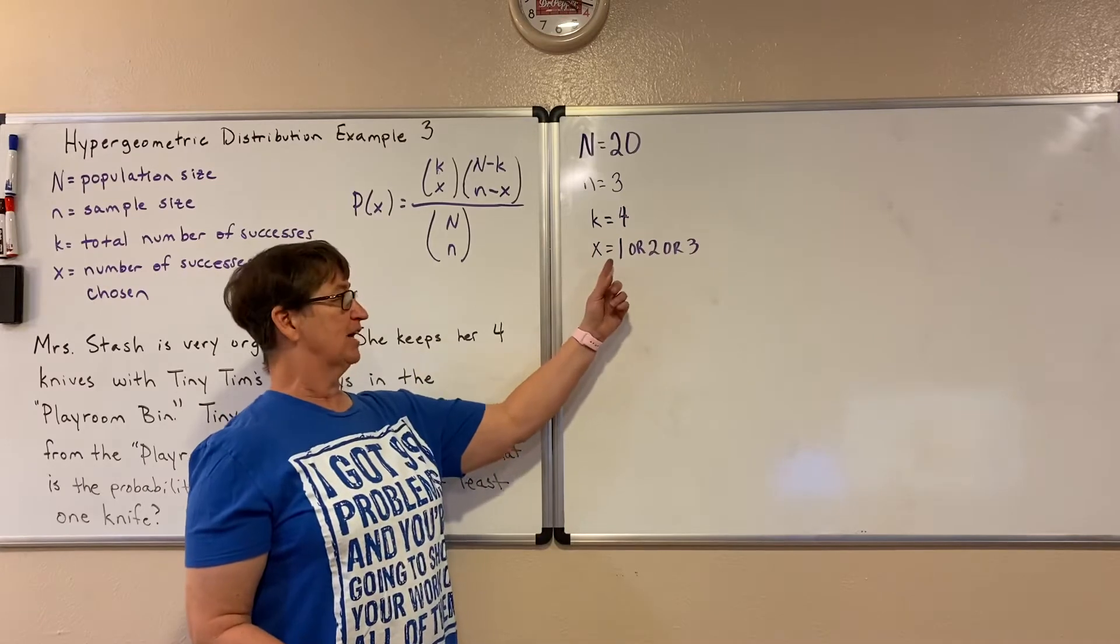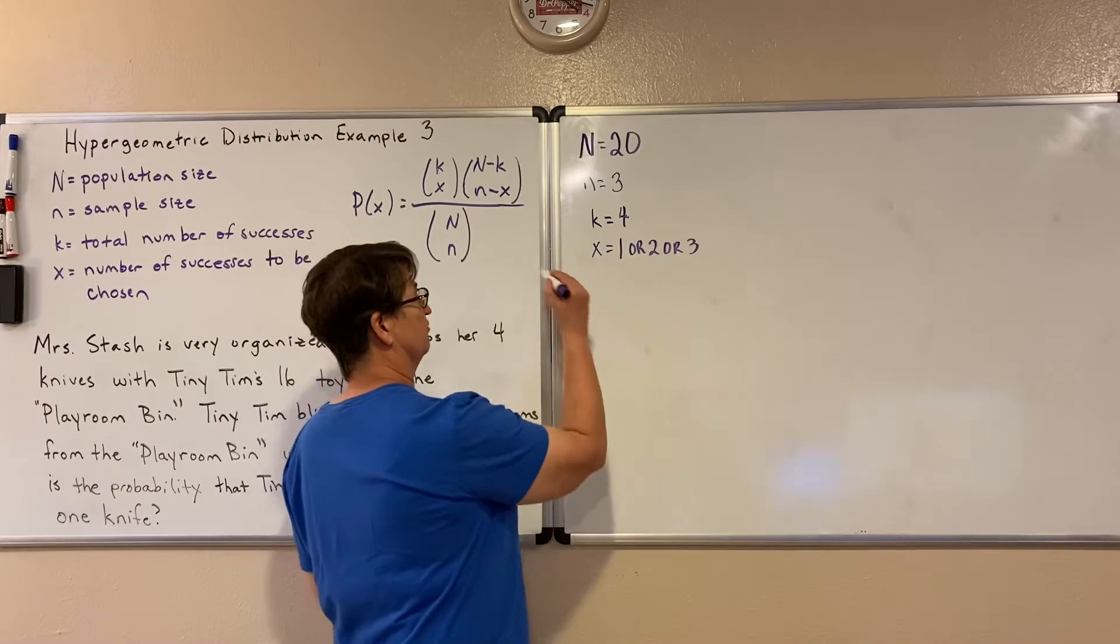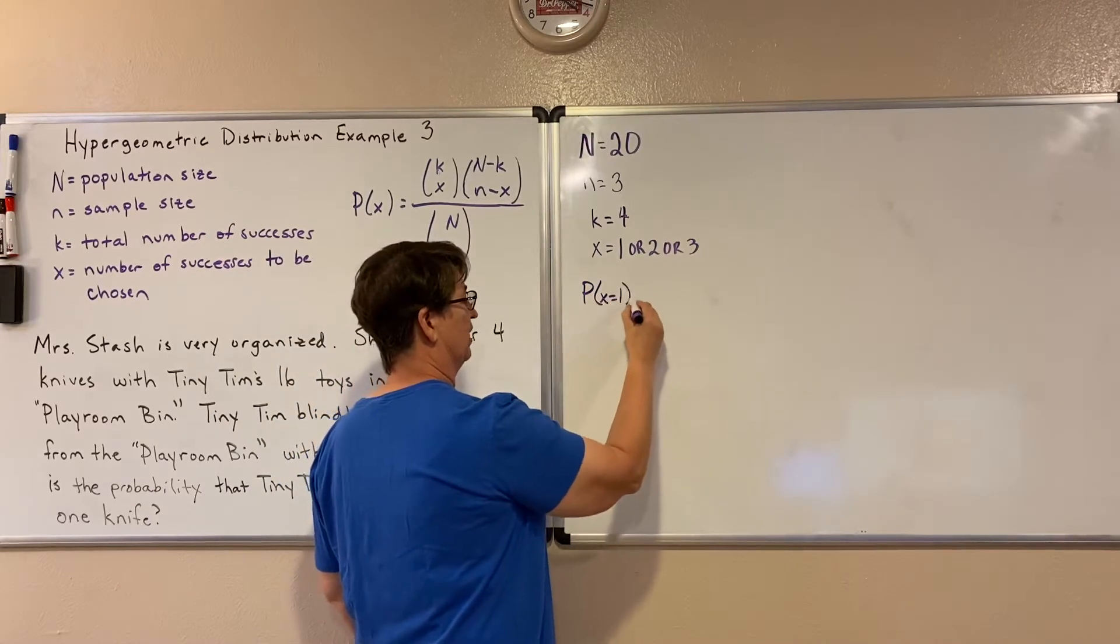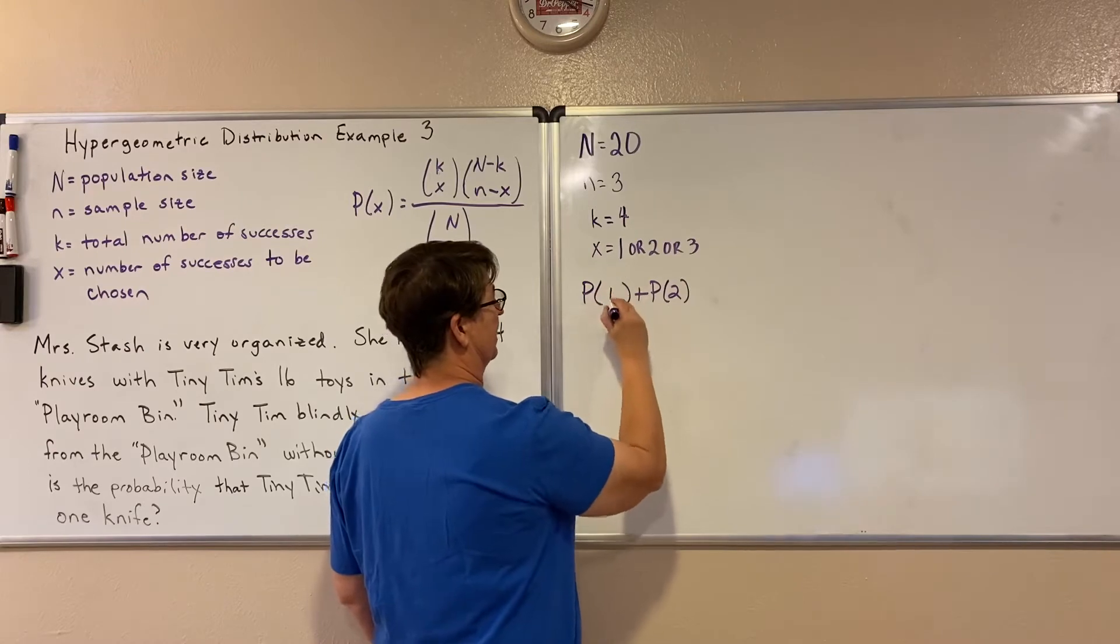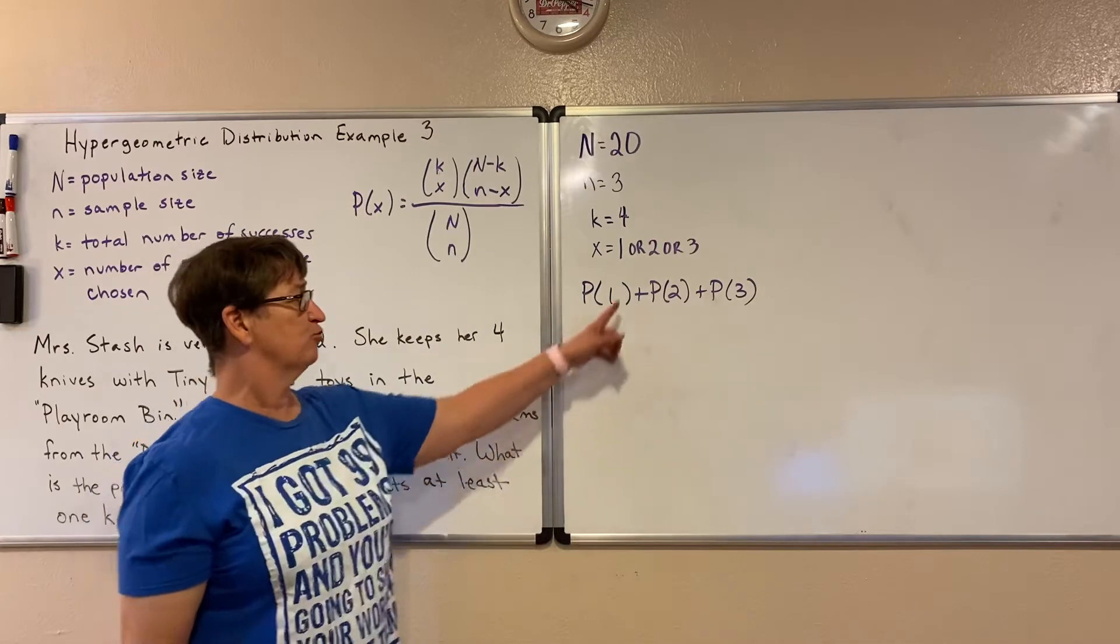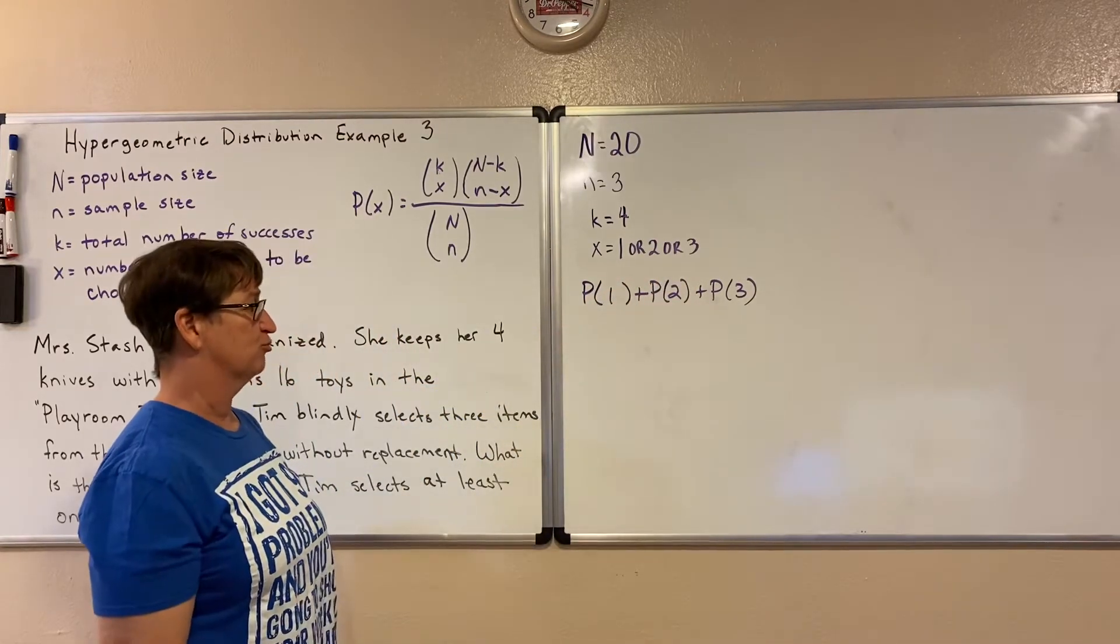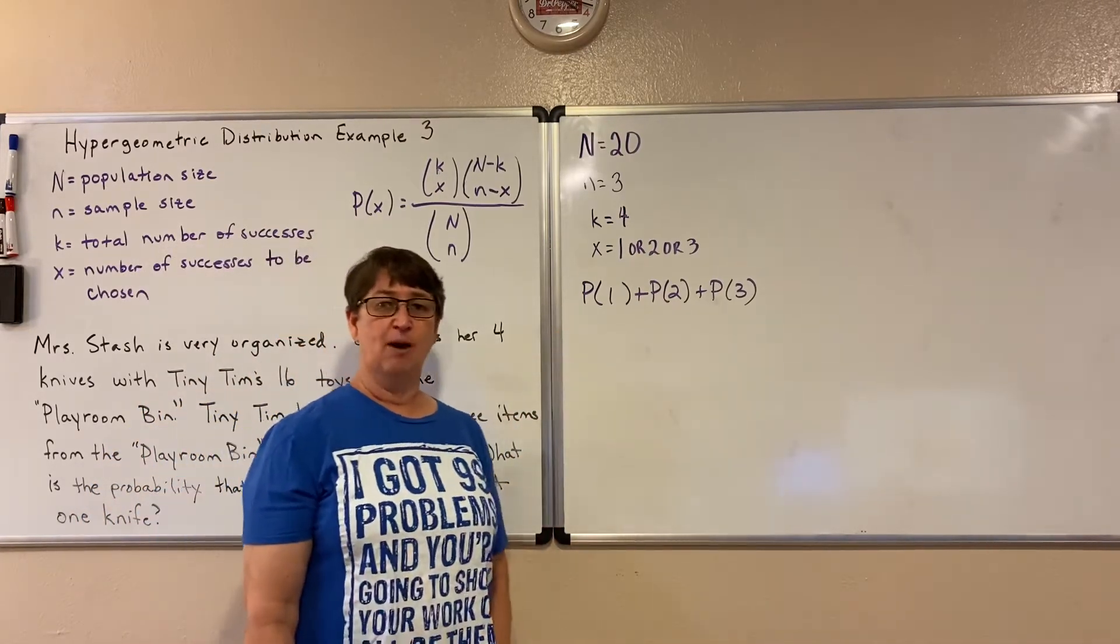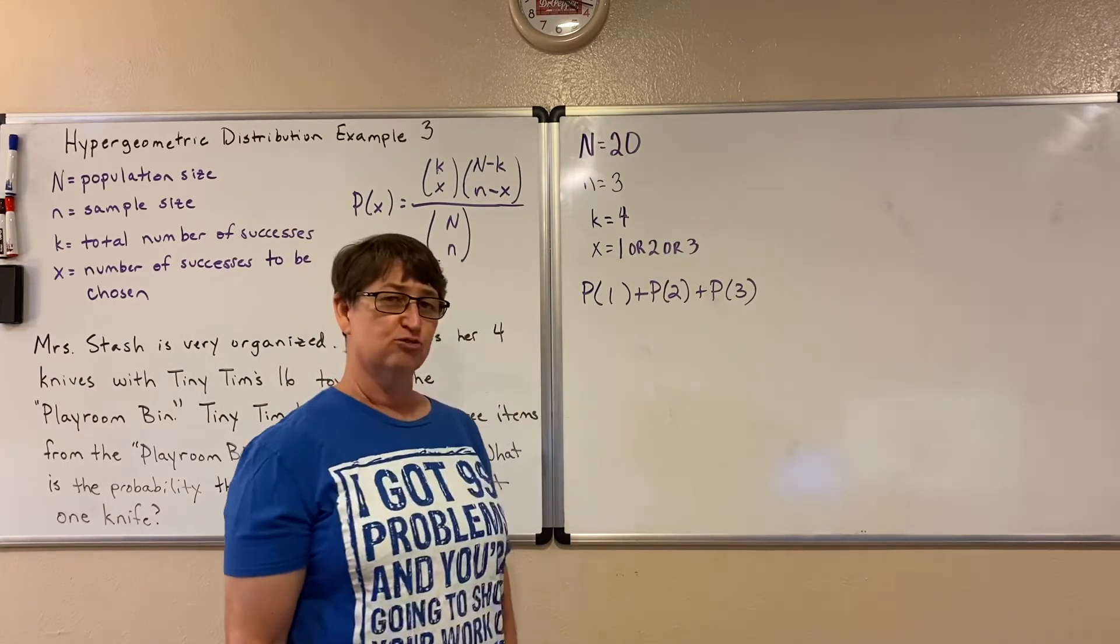But we have to stop here at three because the most he's going to select out of there is three. So here our X is one or two or three. So in order for us to use this formula, we need to find the probability where X equals one plus the probability that X is two plus the probability that X is three. And add all those together. Remember those ORs tell me to add that together. Now that looks like a lot of work. So I always start looking for the complement anytime that there's several little things there involved.